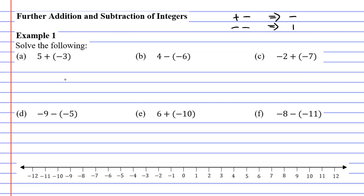So let's look at question A. We have a plus and a minus sign, and we are told to change that to a single minus sign. So this one is just five minus three, which equals two.